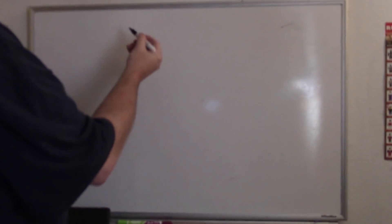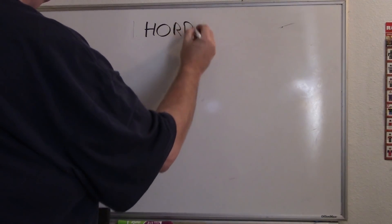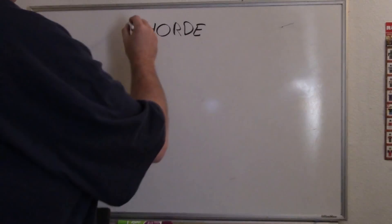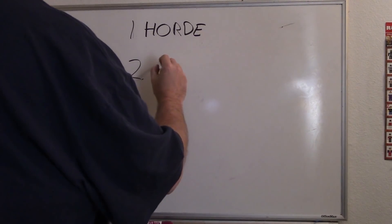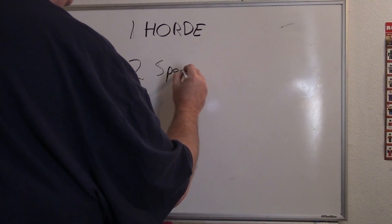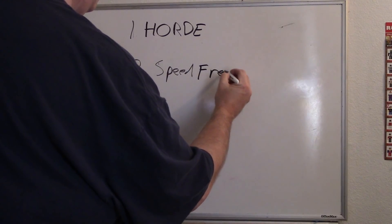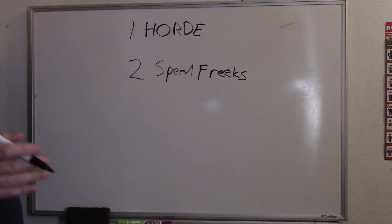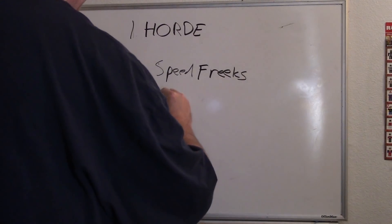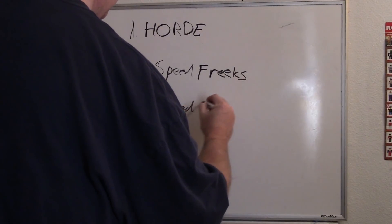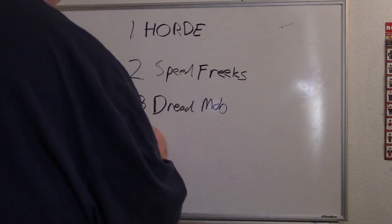So of the four types, the first one is of course horde or green tide. Two, speed freaks. Three, dread mob, which is extremely popular and a lot of fun to play. And fourth and final, gun line, probably the least popular but no less effective.